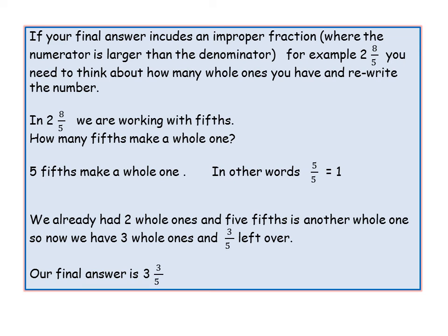Something to think about is that if your final answer includes an improper fraction which is where the numerator is larger than the denominator for example 2 and 8 fifths. You need to think about how many whole ones you have and rewrite the number. So in 2 and 8 fifths we are actually working in fifths. We always look at the denominator to know what we are working in. We are working in fifths. And you need to think how many fifths will make a whole one. Now 5 fifths make a whole one. In other words 5 out of 5 is 1 whole one.